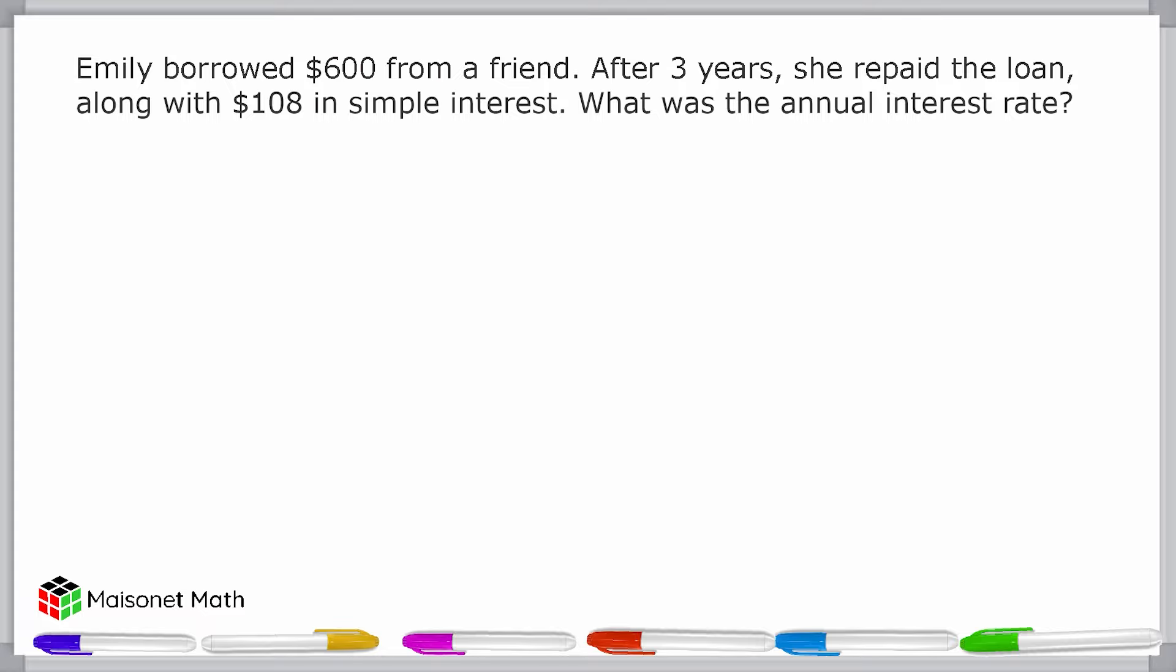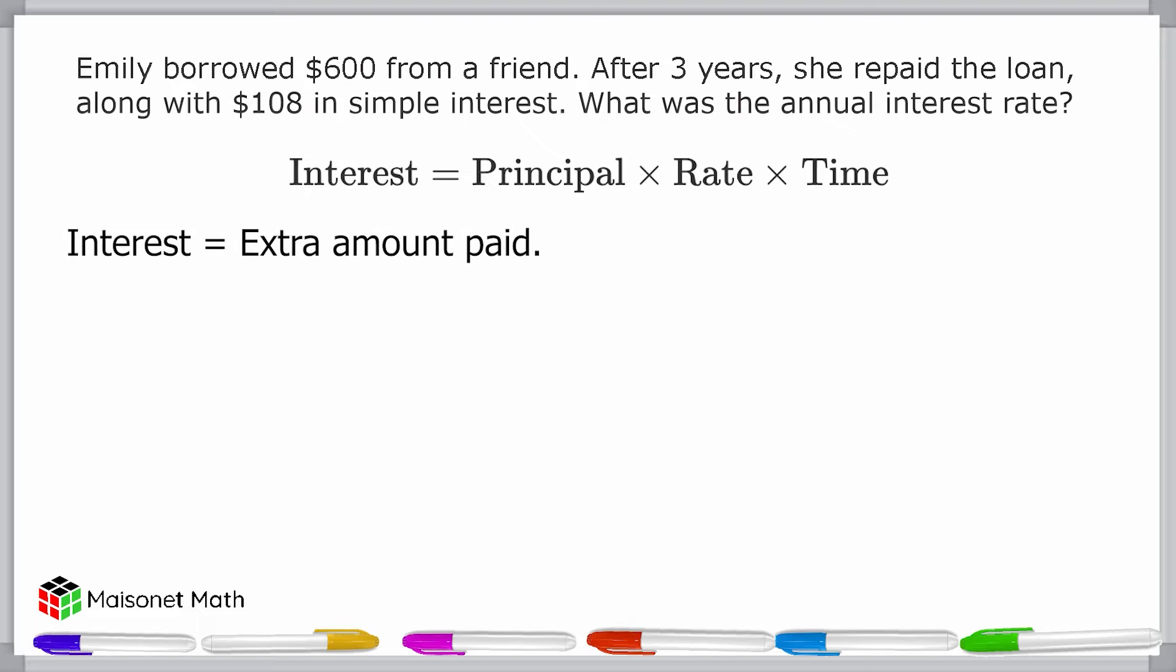So first let's understand what simple interest is. The formula to calculate simple interest is interest equals principal times rate times time. Interest is just the extra amount paid in addition to the amount borrowed because of the interest rate.